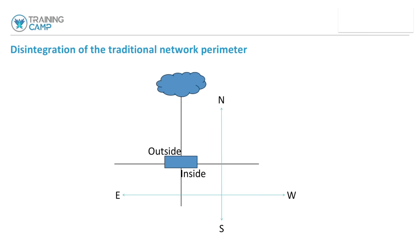We had a traditional network perimeter — a very simple picture, but this was really much what it was like. We had an outside and inside, and this was considered north-south traffic for the last 35 years. We built this perimeter, and people on the inside — the only thing we did was secure outside to inside, and sometimes inside to outside, blocking traffic going to a particular DMZ we didn't want accessed.